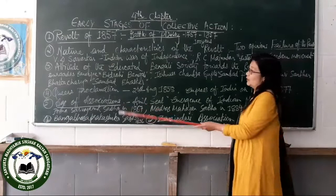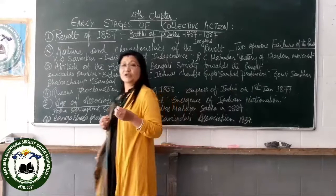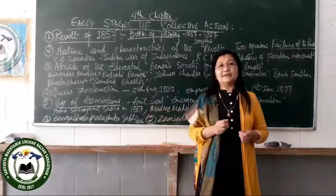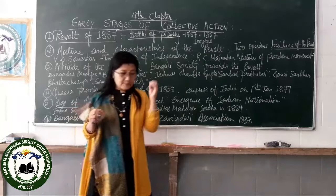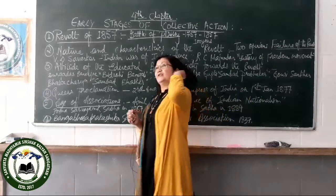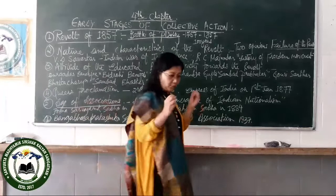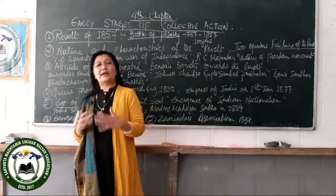The next topic is the Queen's Proclamation. A proclamation is an announcement. After the revolt came to an end, the British passed an act known as the Act for the Better Government of India on 2nd August 1858. In this proclamation, they abolished the East India Company — the East India Company, which had been ruling India since 1600 when Queen Elizabeth gave the trading company permission to trade in India, came to an end.